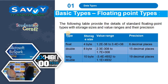The next one is floating point types. The following table provides the details of standard floating point types with storage sizes, value ranges, and their precision. The types are float, double, and long double. Float takes 4 bytes of memory, with value range 1.2e-38 to 3.4e+38, with 6 decimal places of precision.